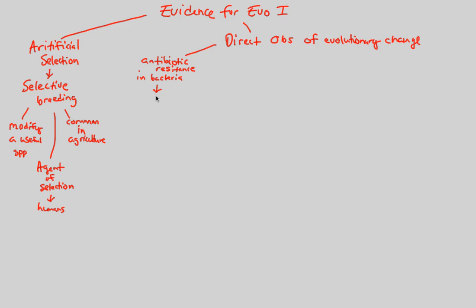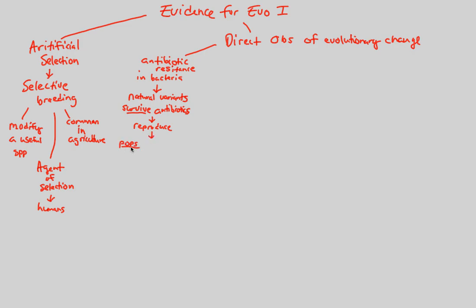Let's say the environment has antibiotics. You are a human taking antibiotics, and the bacteria causing you to be sick are dying. But some bacteria — natural variants — just because of a mutation or a better characteristic, survive the antibiotics. Those that survive then reproduce, and eventually create populations — not individual bacteria — but populations of resistant bacteria.